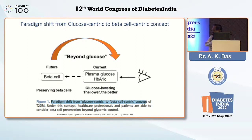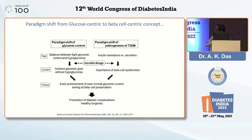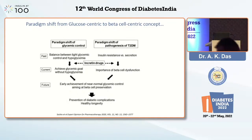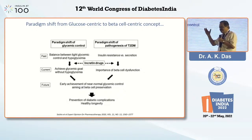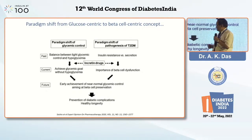This paradigm shift from glucose-centric to beta-cell-centric is a great concept. Healthcare professionals and persons with diabetes are given the insight that they have to protect their beta cells beyond glycemic control. Every pharmacotherapy of diabetes should not aim only at glucose control but at beta-cell preservation. In the past, there was a balance between tight glycemic control and avoiding hypoglycemia. Currently we want to achieve normoglycemia without hypoglycemia.